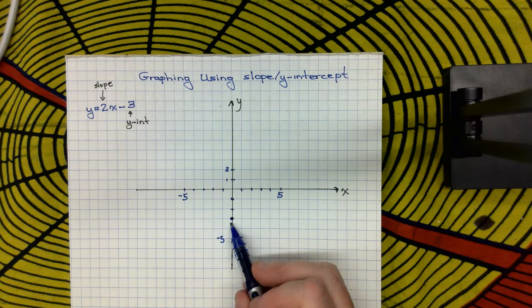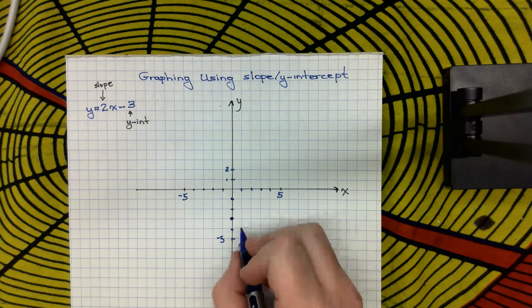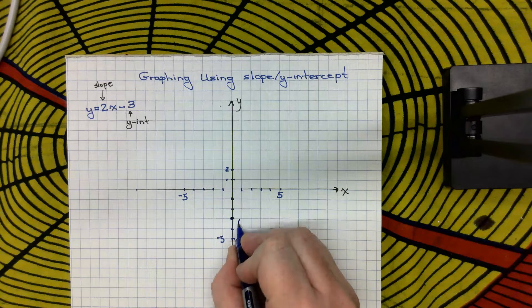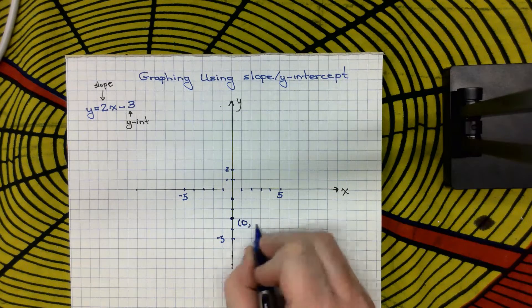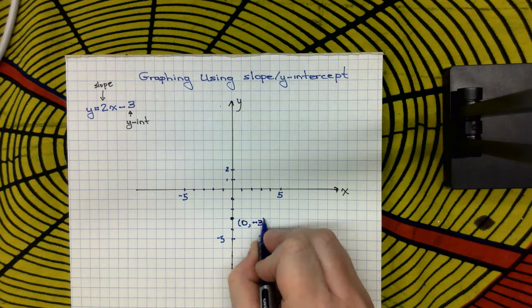And so now that I have graphed the y-intercept, I'm just going to put a point beside it, so my y-intercept is at an x of 0 and a y of negative 3.